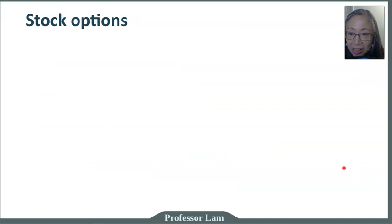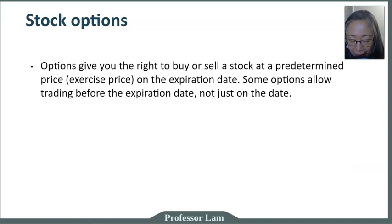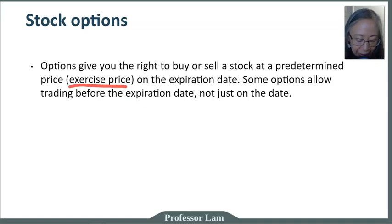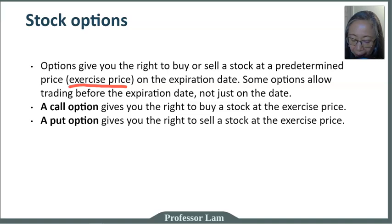Next, we're going to look at stock options. A stock option gives you the right to buy or sell a stock at a predetermined price, called the exercise price. Some options allow trading before the expiration day, not just on the expiration day. There are different types of options: a call option gives you the option to buy a stock, and a put option gives you the option to sell a stock.